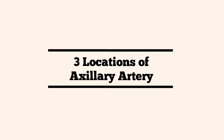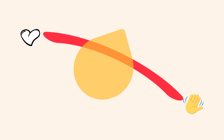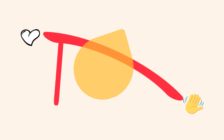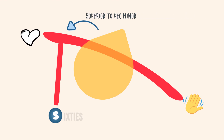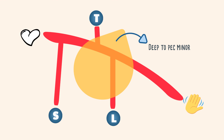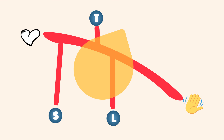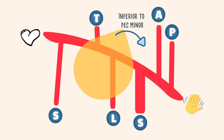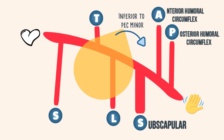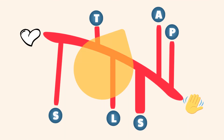Now let's draw the important locations of the axillary artery. First, drawing the artery from the heart to the hand. Now drawing the shape in the middle representing the pectoralis minor muscle — everything will be in relation to this. The first part has only one branch, superior to the pec minor: Sixties — the supreme thoracic artery. The second part has two branches deep to the pec minor: Teens — the thoracoacromial trunk going up, and Love — the lateral thoracic artery going down. The third part has three branches inferior to the pec minor: Sex — the subscapular trunk going down — and Pot — the anterior and posterior humeral circumflex going up. So the first part has one, the second part has two, and the third part has three.